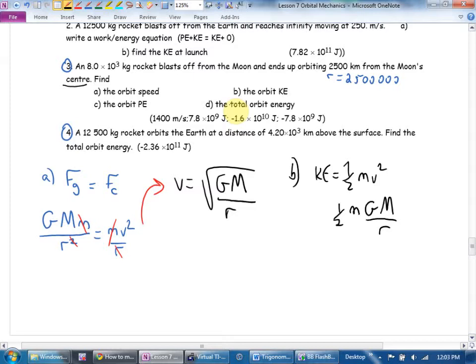Orbital potential energy, that's going to be negative big G big M little m over r. And the total orbit energy is going to be the potential plus the kinetic. Why does the radius of the moon make you look at this? We're doing the moon, for starters. But it says it ends up orbiting 2,500 kilometers from the moon's center. What is the radius of the moon?